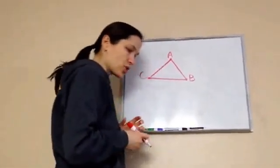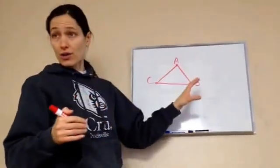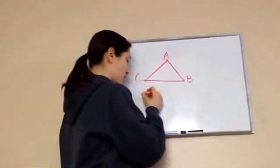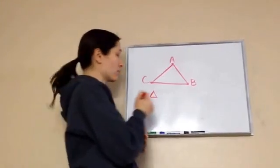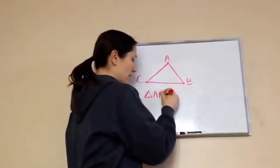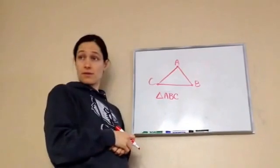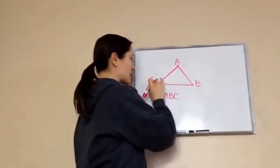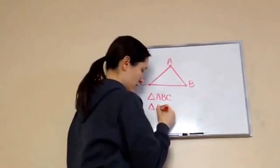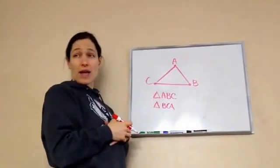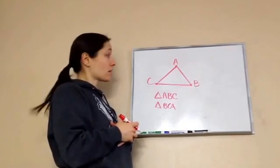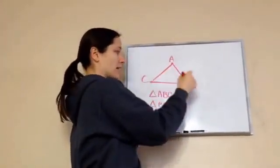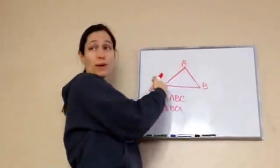If I were to ask you to label this triangle, this is how you would label it. I would say this is triangle ABC. I could have also labeled it triangle BCA. Do you see another way I could have labeled it? CBA. Yes, CBA. So it doesn't matter — we just need to make sure that it flows around.